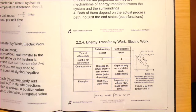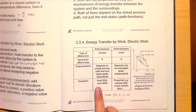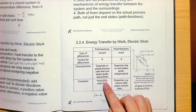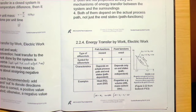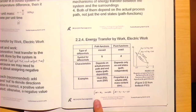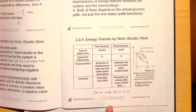Examples of path functions are heat and work. Since they are inexact differentials, we write δQ and δW. So the integral from state one to state two of δW should be written as W₁₂, not ΔW, because it is not an exact differential — it depends on the path connecting point one and point two.